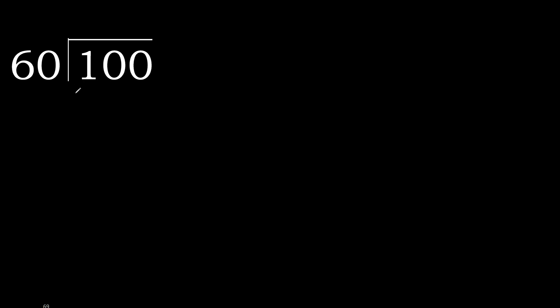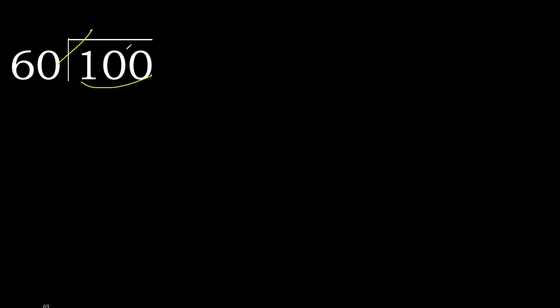100 divided by 60. 1 is less, therefore next. 10 is less, therefore next. 100 is not less, therefore with 100, 60 multiplied by which number is nearest to 100 but not greater? 60 multiplied by 2 is 120, which is greater. 60 multiplied by 1 is 60, it is not greater.